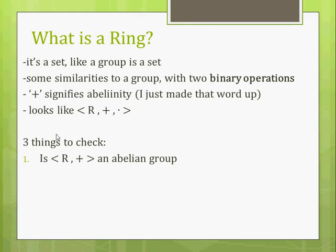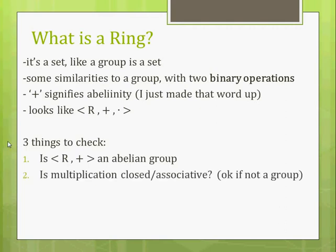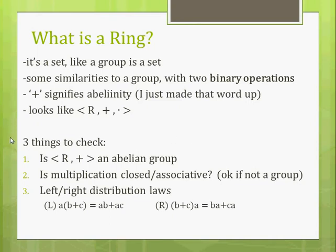Is our set under addition an abelian group? Number two, is multiplication closed and associative? It doesn't need to be a group — just needs to be closed and associative. It doesn't explicitly state that it needs to be closed in the definition for a ring, but it's implied. It's gotta be closed, because we're talking about two binary operations here. A binary operation maps two elements in a set to exactly one element in that set. So it's gotta be closed. And associative, obviously. The third thing we need to check is if the left and right distribution law holds. So just remember those three things: abelian group, multiplication closed and associative, and left and right distribution laws.